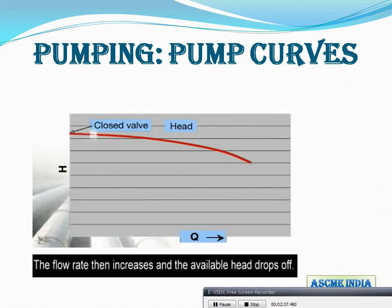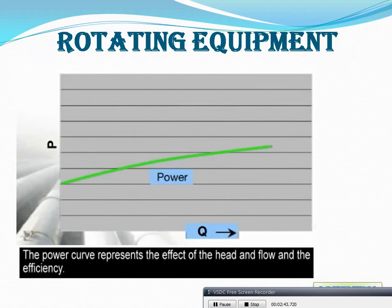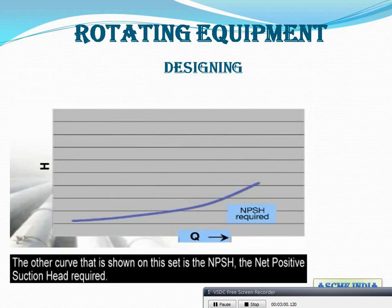As the flow rate increases, the available head decreases. The rotating movement — the power and the quality — is represented by the efficiency of the head and the flow. This shows the efficiency curve alongside the head-flow curve.